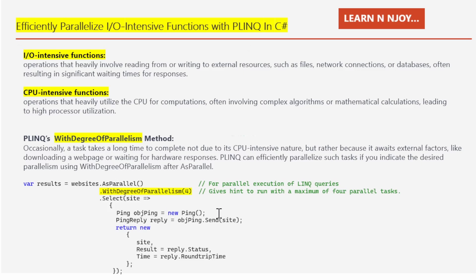Then there is a Select operation. In this Select operation, for each website URL in the websites array, a Ping object is created. That's what I have written: ping objPing = new Ping(). Then I'm going to use the Send method of this objPing class. Basically, I'm just going to ping a site with the help of this Send method.